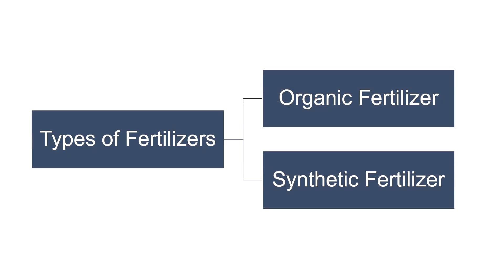Moreover, there are two types of fertilizers: organic fertilizer and synthetic fertilizer. Organic fertilizers are the ones made up of natural materials like composted plant materials, peat moss, bone, seaweed, etc. As against, synthetic fertilizers are inorganic ones that are industrially manufactured chemicals which easily dissolve in water and are used by plants instantly as they are added to the soil.